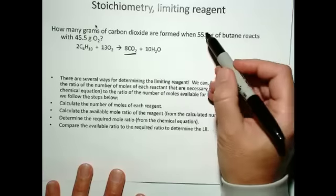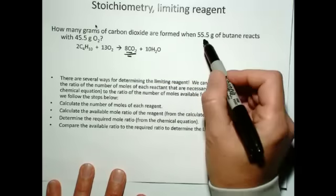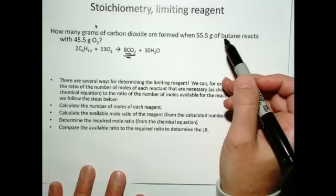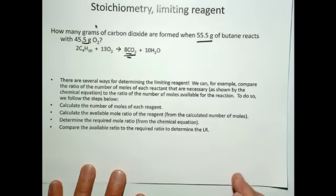To figure out how much is formed, you have to figure out which of these two reactants is your limiting reagent or limiting reactant. And there's a lot of different ways to do that.